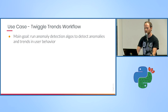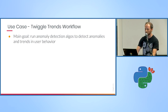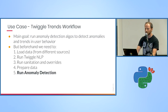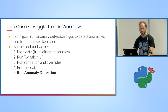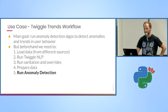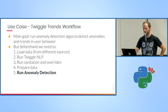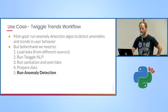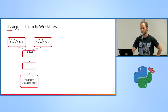Our main goal is to run anomaly detection algorithms to detect anomalies. But beforehand we need to do a few things: load data from different sources, run Twiggle NLP, run some sanitation overrides and data preparation tasks, and in the end run the actual anomaly detection. Our workflow looks something like this, and we'd like each square to be a Luigi task.